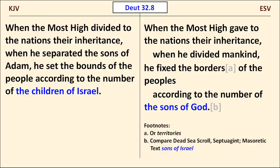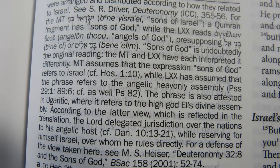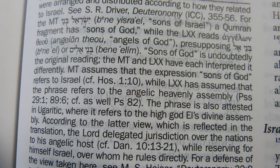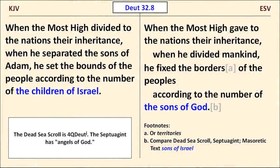We'll start with Deuteronomy 32:8. Here the Masoretic text, which the KJV translates, reads "Sons of Israel," but the ESV has "Sons of God." Where did that come from? The ESV is following a scroll found in Cave 4 at Qumran — Scroll J of Deuteronomy. The reading from the Septuagint is similar: it has "angels of God." A very informative footnote in the NET Bible states that "Sons of God," the Dead Sea Scroll reading, is without doubt original, and the Masoretic text and the Septuagint have interpreted it differently, while a similar phrase in Ugaritic refers to the god El's heavenly assembly.